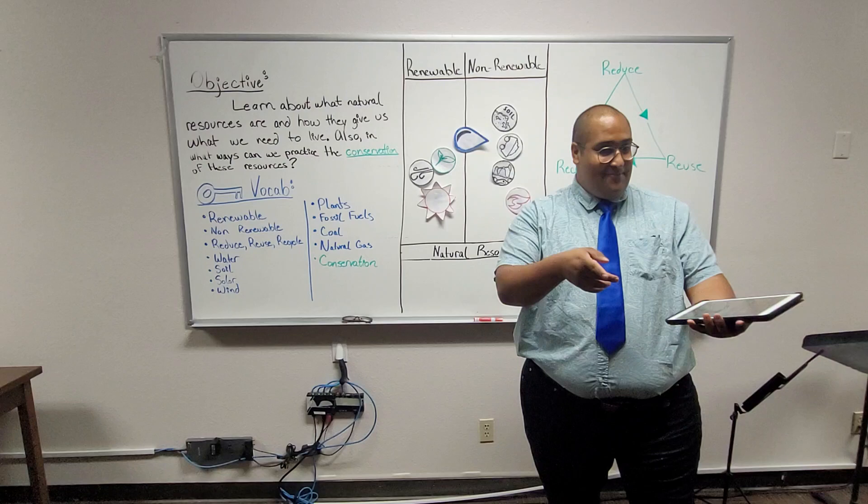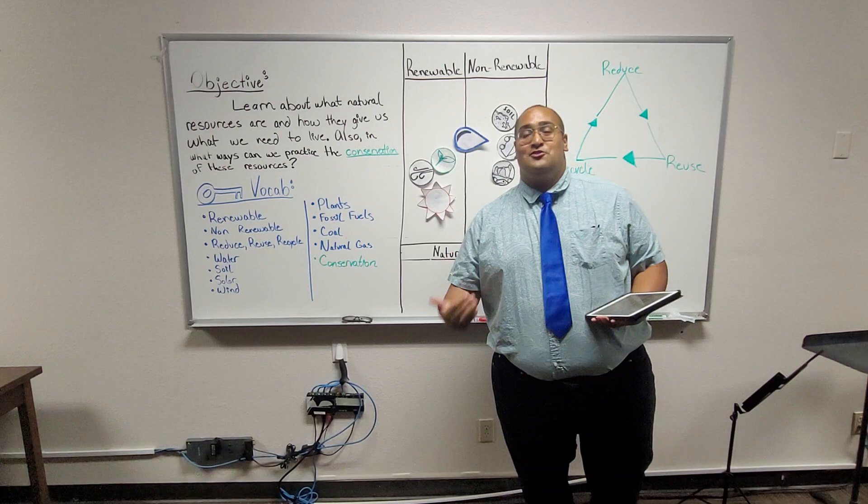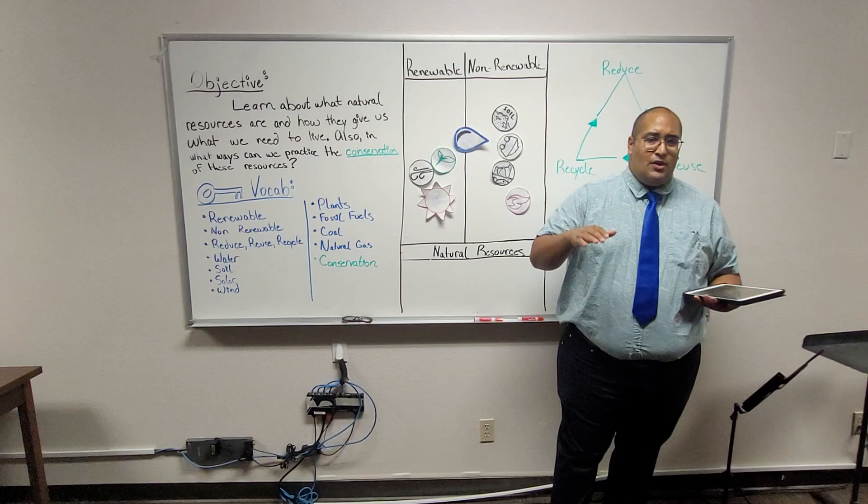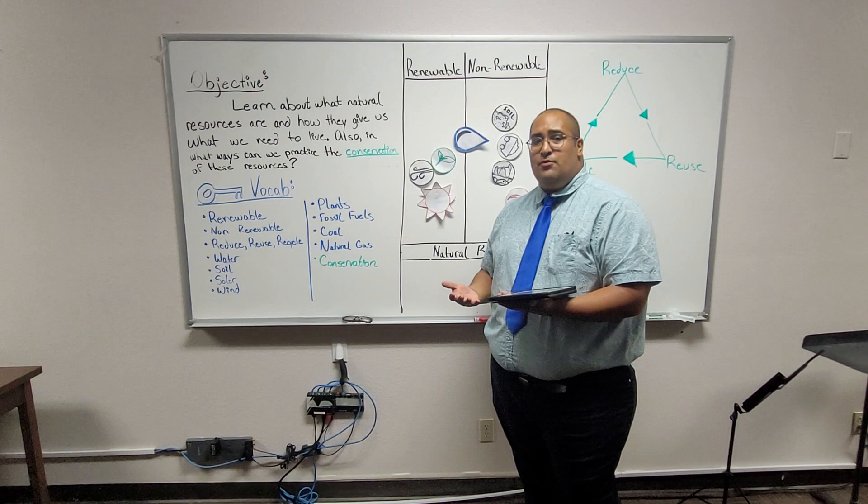So some of these natural resources, we can use them without changing them. For example, fresh water and soil. But some of them we have to change, you know, fossil fuels and wood. We can't use them as is. We have to change them. And so we also have to understand that with specific resources, there's not that much of it available. Once we use it, that's it. So fossil fuels and wood, those are good examples.